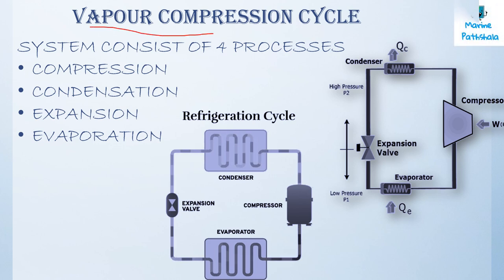Coming to the vapor compression cycle, it is the most commonly used system of refrigeration. In this system, a gas called refrigerant is used as a medium of heat transfer and is alternately condensed and evaporated to remove heat from the space being cooled. The system consists of four processes: compression, condensation, expansion and evaporation.